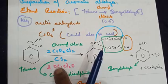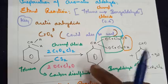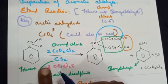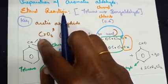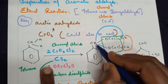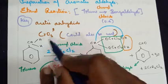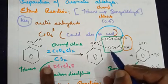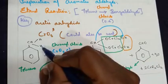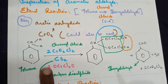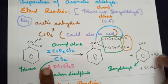Coming back to the reaction: toluene has a CH3 group. I have pulled out two hydrogens from it. When you treat it with chromyl chloride in the presence of carbon disulfide, two molecules of chromyl chloride react. Each chromyl chloride (O=Cr(Cl)2=O) combines with one hydrogen from the CH3 group, giving a CH with each hydrogen attached to an O-Cr(Cl)2-O unit.